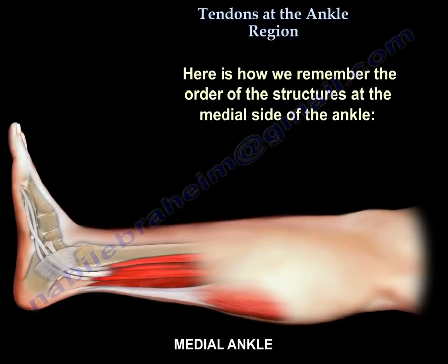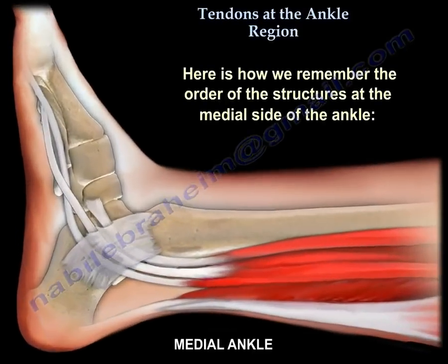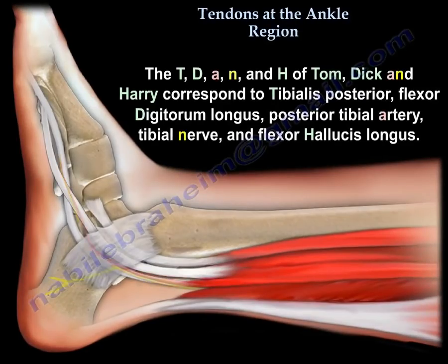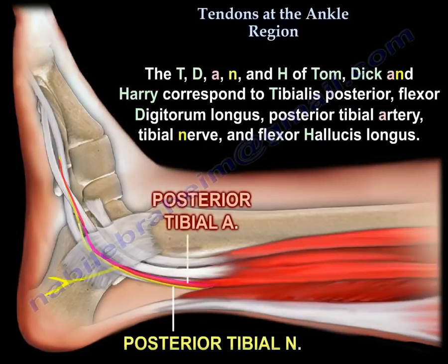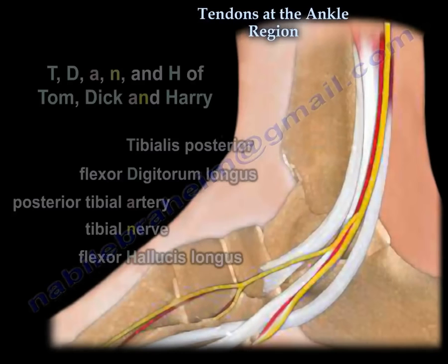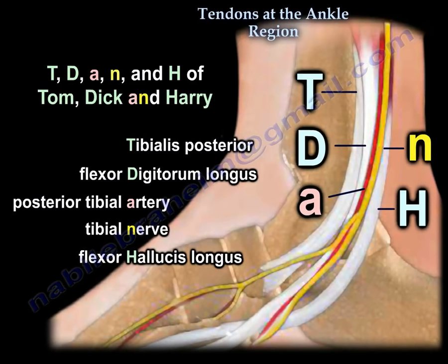Here is how we remember the order of the structures on the medial side of the ankle: 'Tom, Dick, And Nervous Harry.' T corresponds to the tibialis posterior, D corresponds to the flexor digitorum longus, A corresponds to the posterior tibial artery, N corresponds to the tibial nerve, and H corresponds to the flexor hallucis longus.